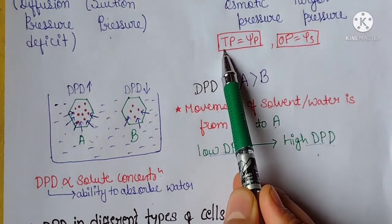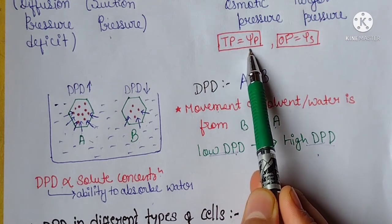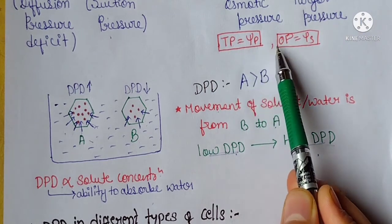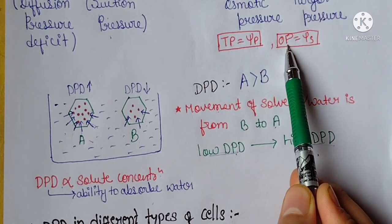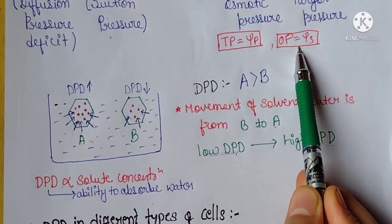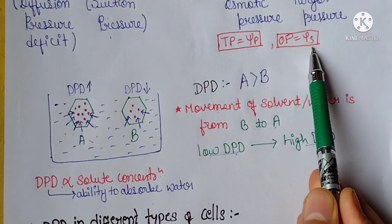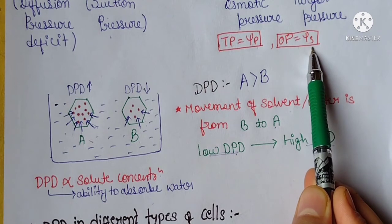Turgor pressure (TP) is equal to psi-P, which is the pressure potential. Osmotic pressure is also equal to psi-S, that is the solute potential.